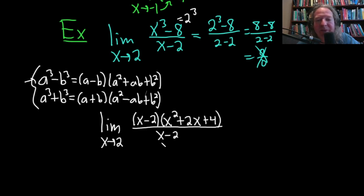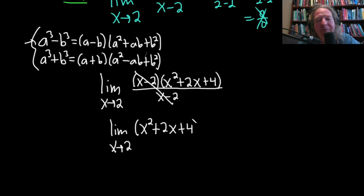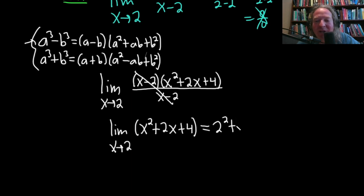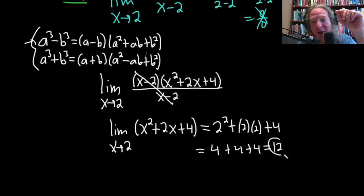Applying the formula: a = x, b = 2, so we get the limit as x approaches 2 of (x - 2)(x² + 2x + 4) all divided by (x - 2). The (x - 2) terms cancel, leaving the limit as x approaches 2 of (x² + 2x + 4). Plugging in 2: 4 + 4 + 4 = 12. So the answer is 12.